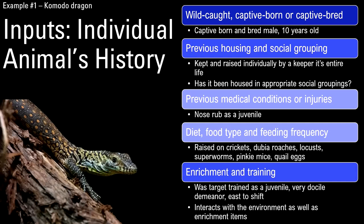Whether an animal is wild caught or captive bred can have a big influence on behavior, temperament, and demeanor towards staff. You'd also note where animals have been housed previously if they came from somewhere else. In this specific example, the animal has been at this institution — a Komodo raised from a hatchling in a zoo setting.